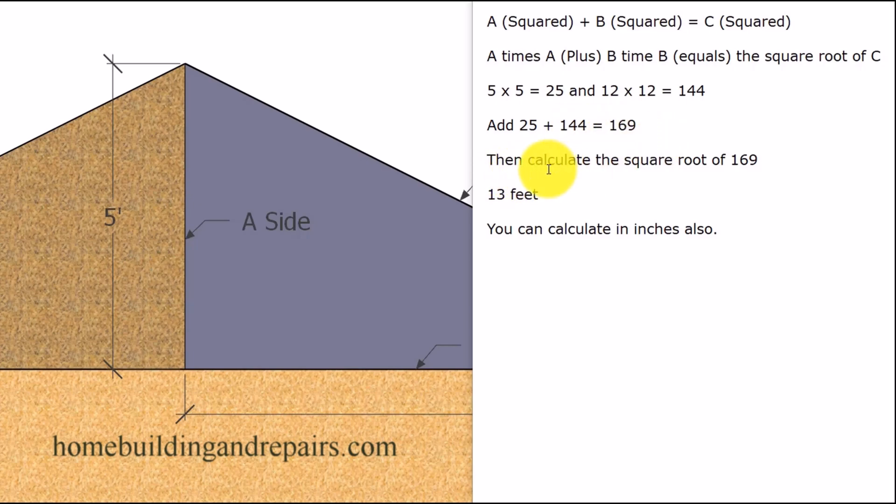And then if we calculate the square root of 169, we get 13. The length of this side, side C, would be 13.